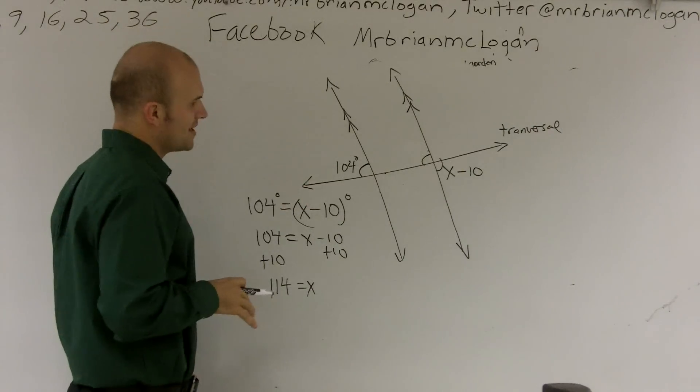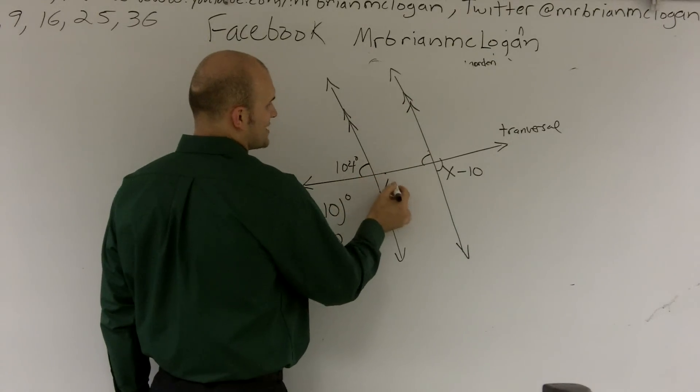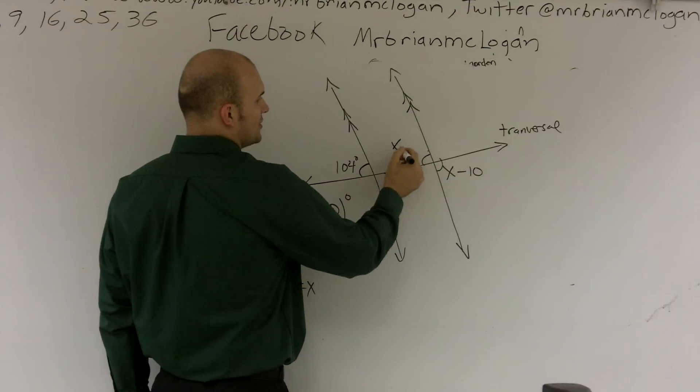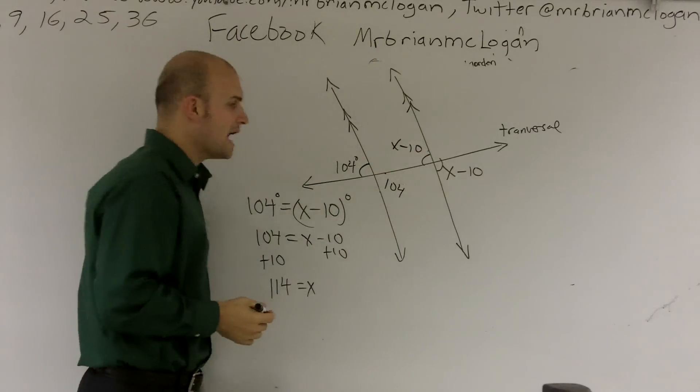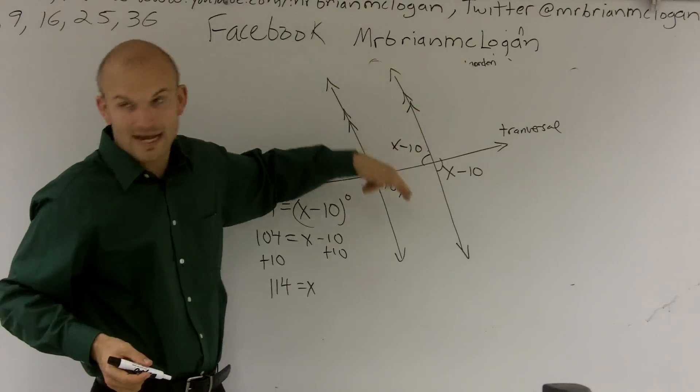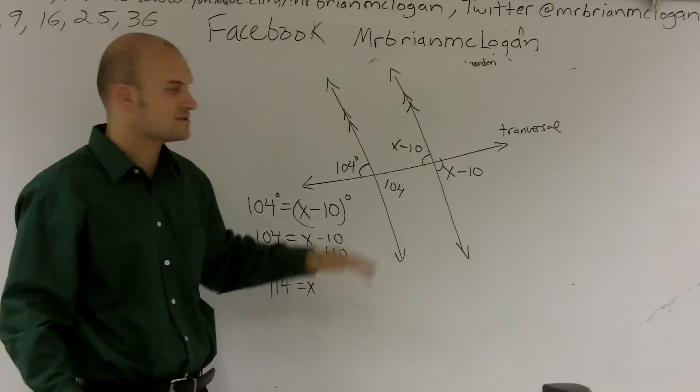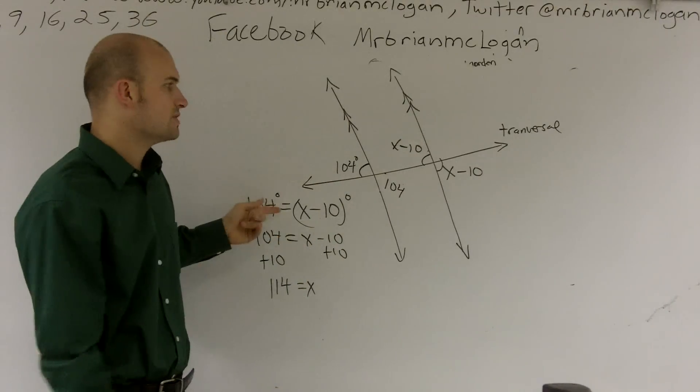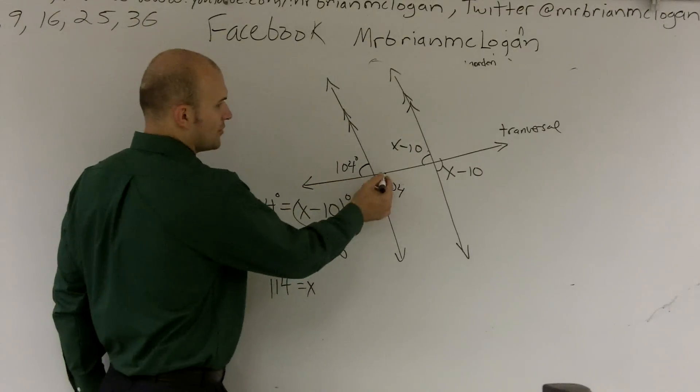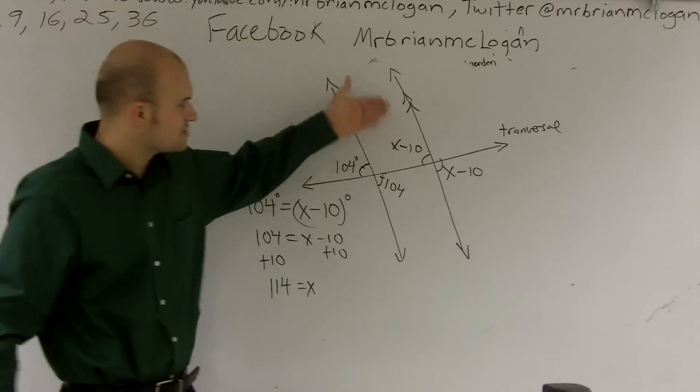So we'll just leave it like that for right now. There is a way you could actually say that since this is vertical, that's 104. Since those are vertical, that's x minus 10. Now what I have is two interior angles that alternate above and below my transversal. Therefore, they're alternate interior angles. And alternate interior angles are also equal to each other. So that's just another way you can use alternate interior angles to solve for that problem.